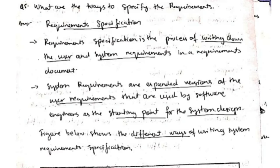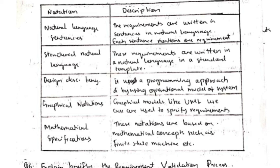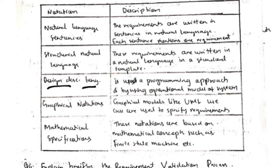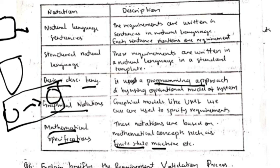Ways to specify requirements: first, natural language sentences — writing requirements normally. Second, structured natural language — following a format to mention requirements. Third, design description language — using a programming approach to write requirements. Fourth, graphical notation — drawing models representing requirements. Fifth, mathematical specifications — using finite state machines and similar concepts to specify requirements.